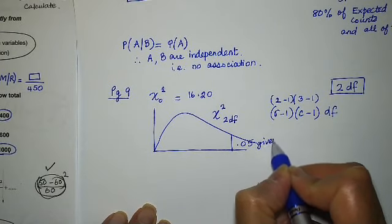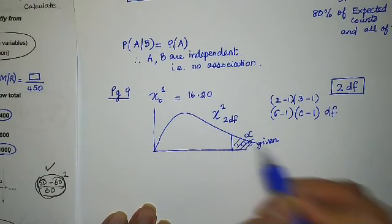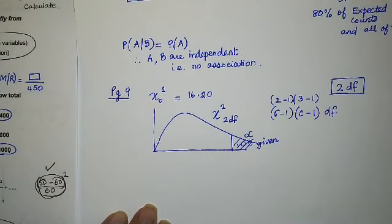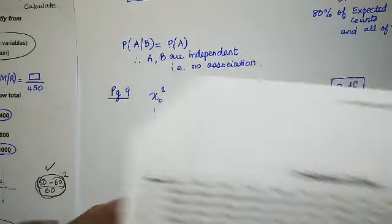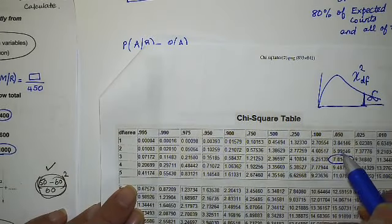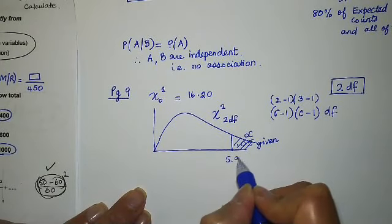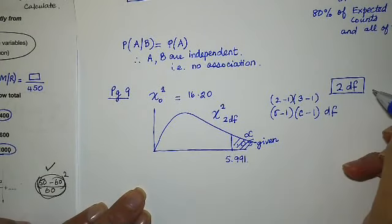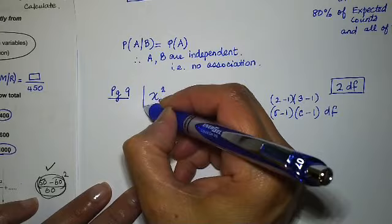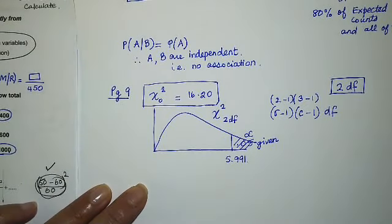So chi-square, 2 degrees of freedom. Alpha 0.05 was given. Notice I put the whole alpha in the right tail. I go back to my chi-square table, and 0.05 and 2 degrees of freedom is 5.991. That's my critical value.